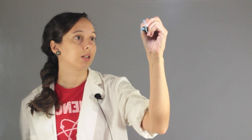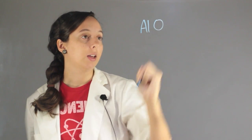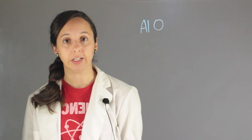Alright, so molten aluminum oxide, what is that? Well, aluminum oxide is going to contain aluminum, Al, and oxygen, and now I have to figure out how much of each element.